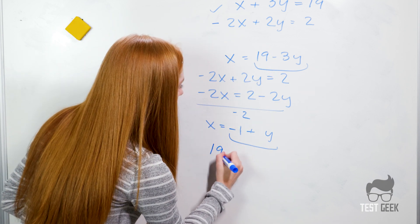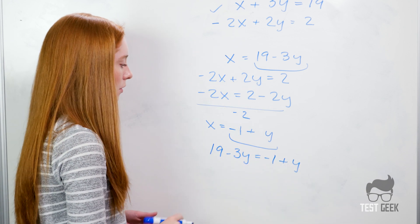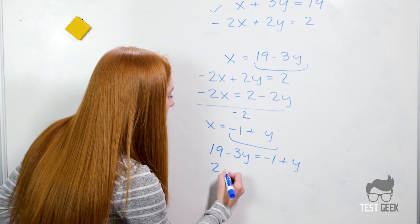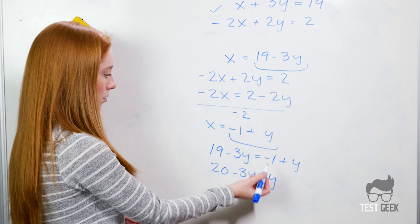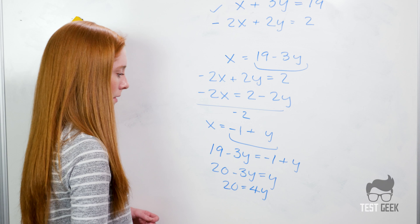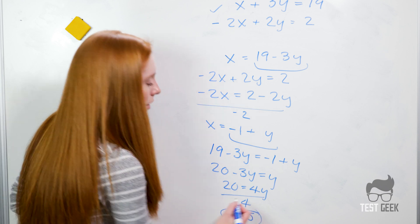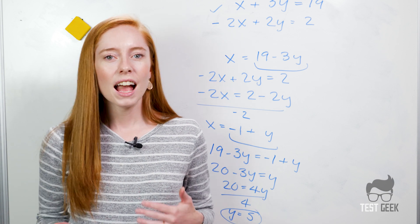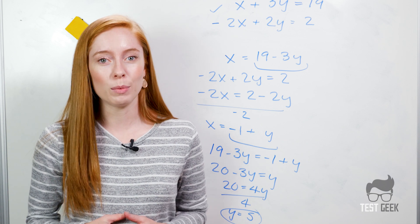Since both expressions equal x, we can set them equal: 19 minus 3y equals negative 1 plus y. Adding 1 to both sides gives 20 minus 3y equals y. Moving 3y over gives 20 equals 4y. Dividing by 4, we get y equals 5 — the same answer again. All three methods give us the same result. Think about which option makes the most sense for the numbers you're given so you can save yourself a little bit of time.